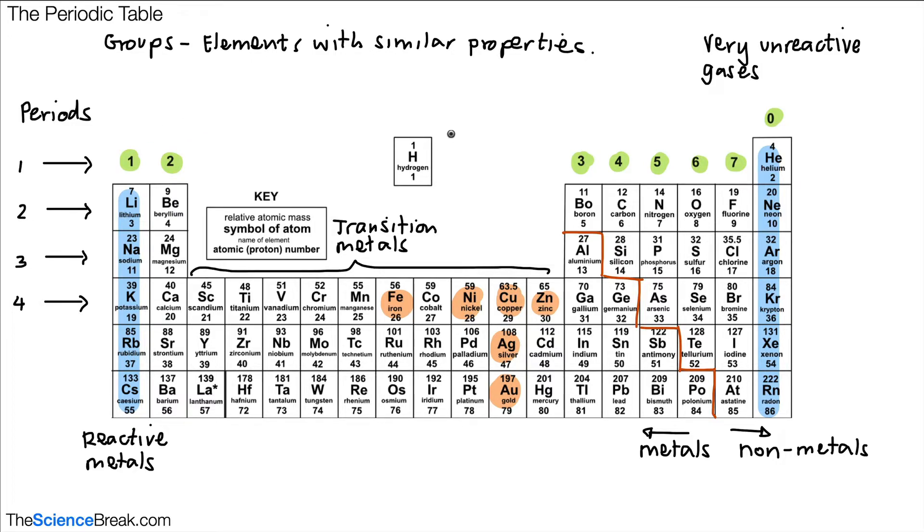There's one element, hydrogen, that's not found in any particular group, but it is in period 1. It's not in a particular group because its properties can change slightly. It doesn't really fit into any one group, but it is found in period 1 of the periodic table.